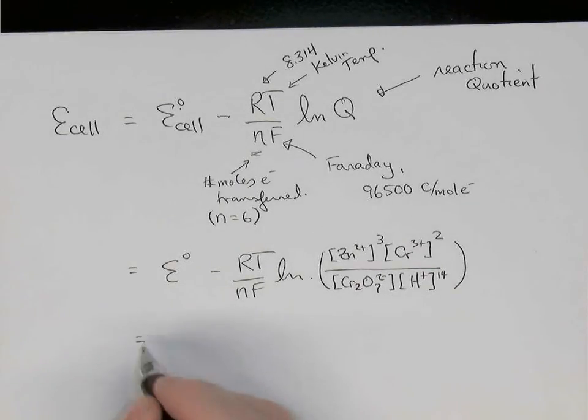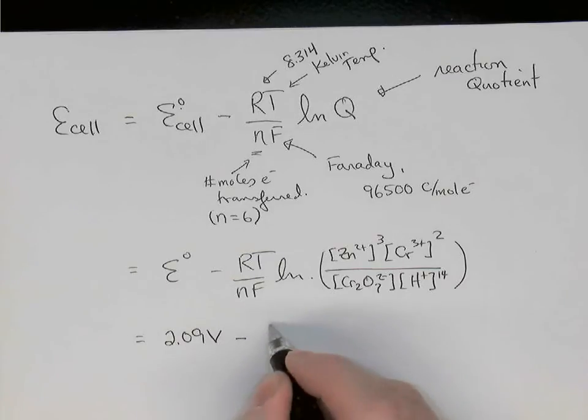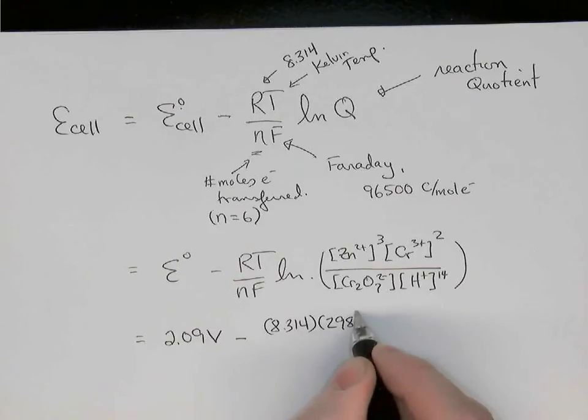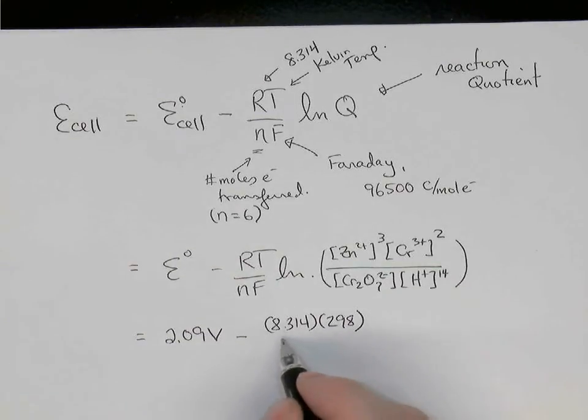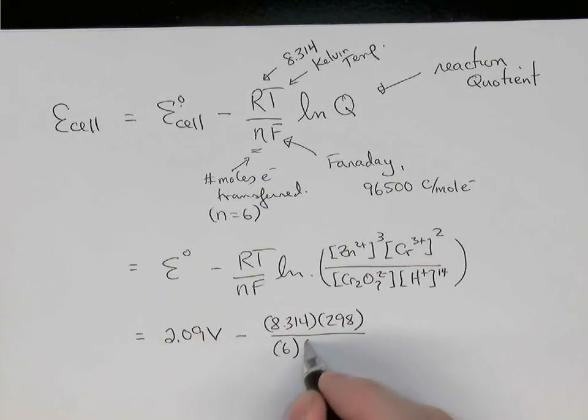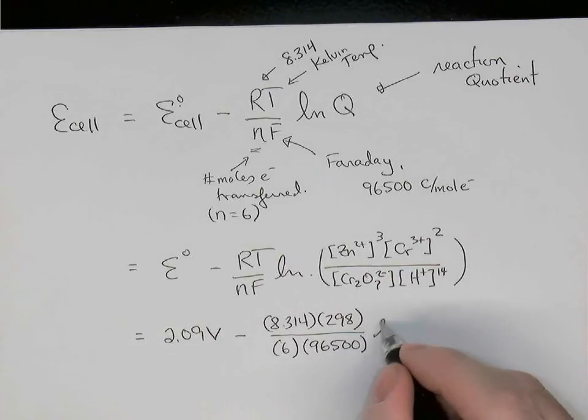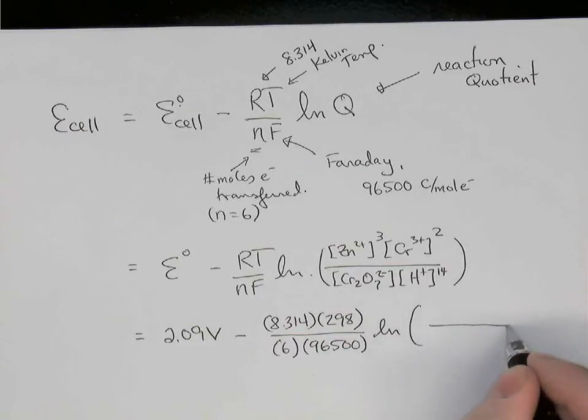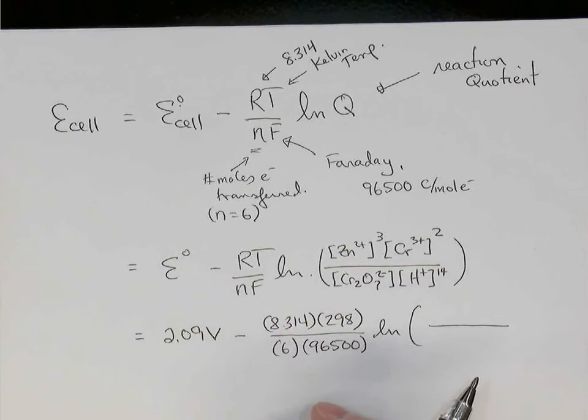So now let's put our numbers in. The standard cell potential was 2.09 volts. That's what we just calculated a moment ago. Minus R times T. The temperature was 25 degrees Celsius, or 298 Kelvin. Just add 273 to 25 degrees. The N, the number of moles of electrons we've already established, was 6 in this case. And the Faraday, 96,500 coulombs per mole. Times the natural log of,